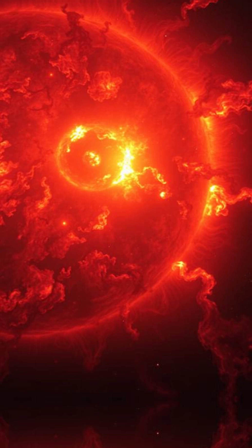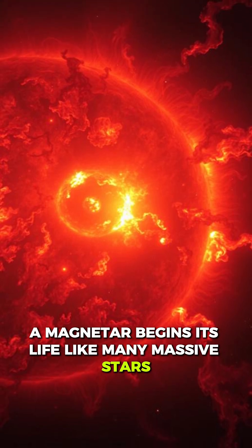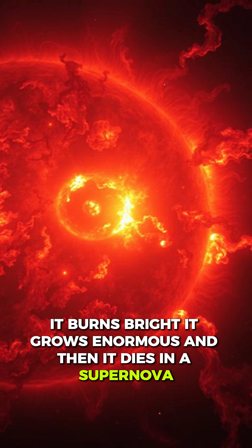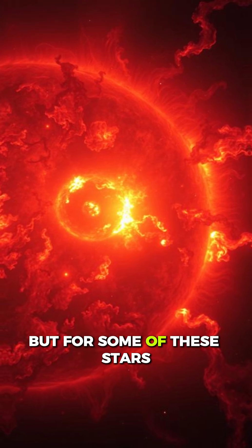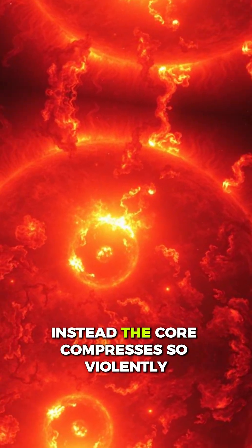A magnetar begins its life like many massive stars. It burns bright, it grows enormous, and then it dies in a supernova. But for some of these stars, the collapse doesn't end with a normal neutron star. Instead, the core compresses so violently that the magnetic field becomes a trillion times stronger than Earth's.